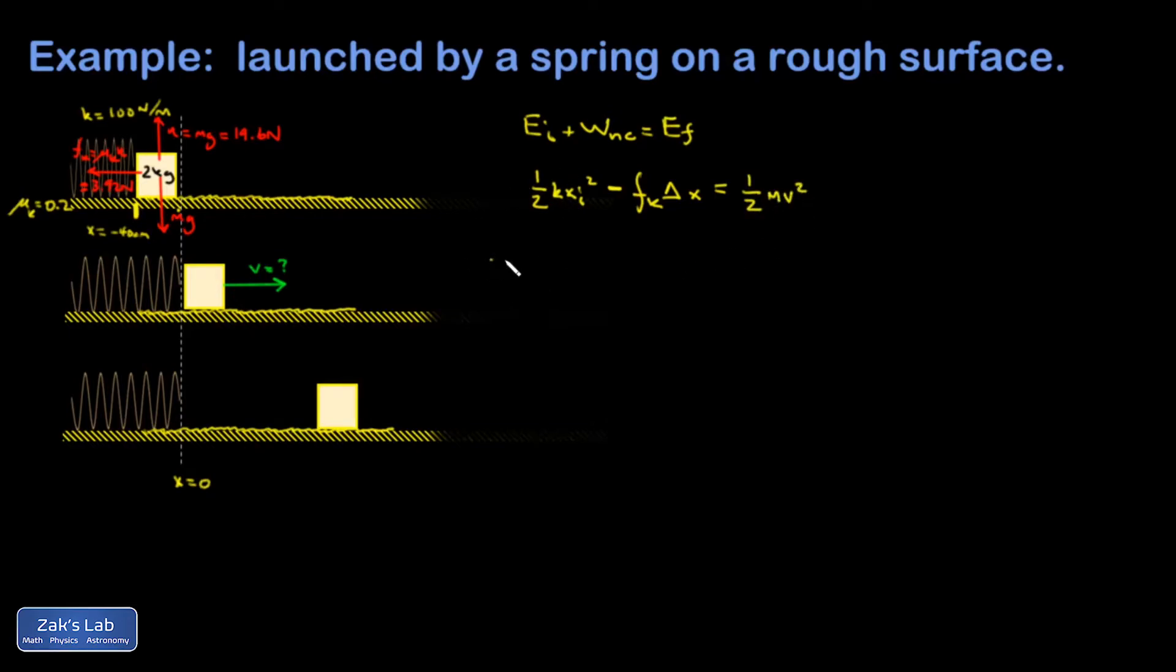And then I can start to plug things into this. So I end up with 1/2 kx initial, it doesn't matter that it's negative because I'm going to square it, that's 0.4 meters squared. So getting into SI units there. Friction force has a magnitude of 3.92 newtons, and it's acted through a displacement of 40 centimeters. My mass is 2 kilograms. V is the only unknown left.